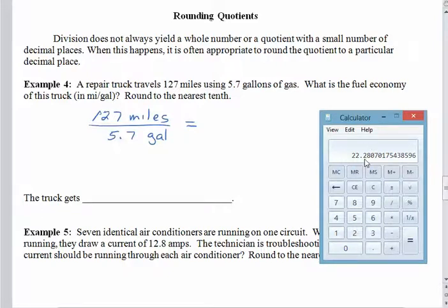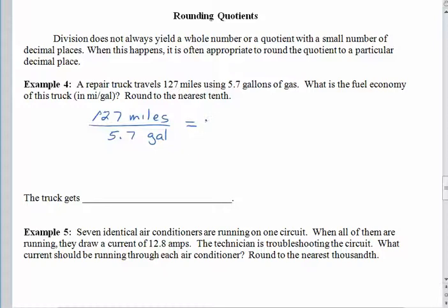Our directions say we should round to the nearest tenth. So if I look right here as my tenths place, there's a 2. Looking to the right, I see that I have an 8, which is going to bump my 2 up 1. So the calculator display gave us something like 22.28070175 stuff. But we already know how to round to the nearest tenth. Alright, we find the tenths place, and then we look to the right. And of course the 8 is going to cause the 2 to bump up by 3. So this truck gets about 22.3, and these are miles per gallon.